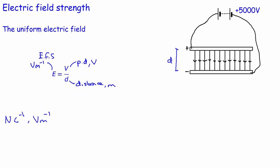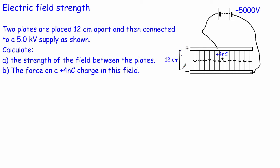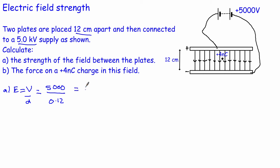Let's look at a question for a uniform field. We have two plates 12 centimetres apart connected to a 5 kilovolt supply, and we want to calculate the electric field strength between the plates. Using E = V/d: the potential difference is 5000 V and the distance is 0.12 m. Calculating gives E = 4.2 × 10⁴ volts per metre (or newtons per coulomb). We give the answer to two significant figures, matching the significant figures of the given data.